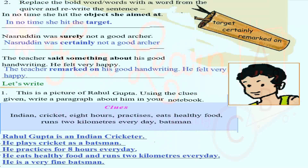Replace the bold words with words from the quiver. The quiver contains: target, certainty, remark, tone. For example: 'In no time she hit the object she aimed at' becomes 'In no time she hit the target.' 'Nasiruddin was surely not a good archer' becomes 'Nasiruddin was certainly not a good archer.' 'The teacher had something to say about his good handwriting' becomes 'The teacher remarked on his good handwriting. He felt very happy.'